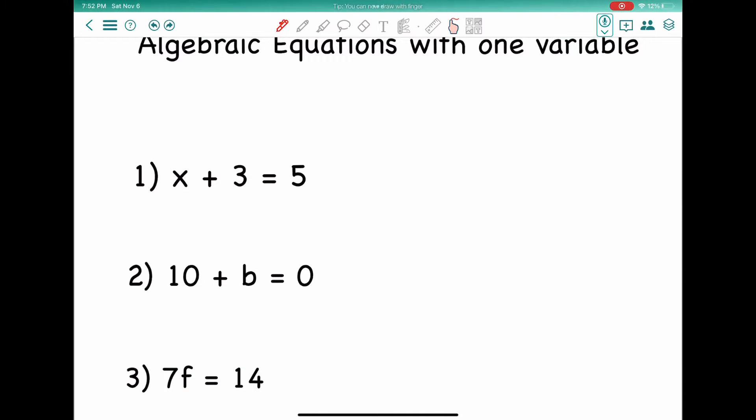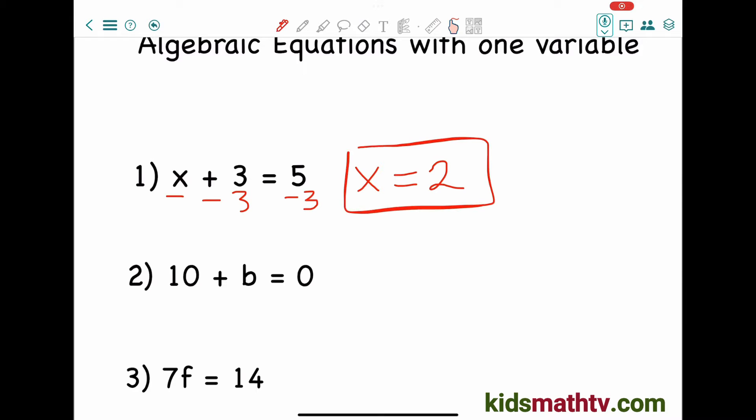Let's look at number 1. We have to isolate x. So the way we do that is we have to take anything from this side and subtract it to the other side or add it. But in this case, we have to subtract 3. So let's subtract 3 from both sides. And x equals, what is 5 minus 3? That is 2. So x equals 2.